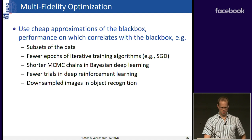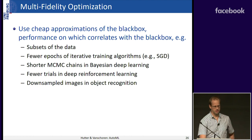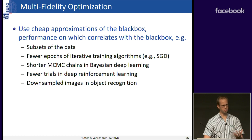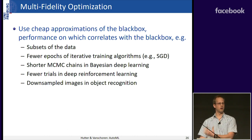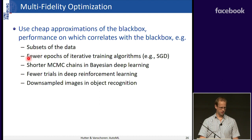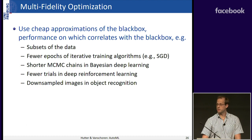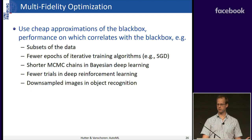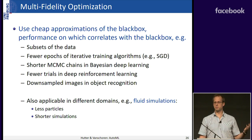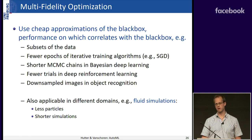Multi-fidelity optimization uses cheap approximations of the black-box function whose performance correlates with the actual expensive black box. Cheaper approximations include subsets of data, fewer SGD epochs, shorter MCMC chains in Bayesian deep learning, or fewer trials in deep reinforcement learning. You could also use downsampled images in object recognition. This approach applies broadly — even in fluid simulations, you could use fewer particles or shorter simulations. It's a generic optimization trick beyond hyperparameter optimization.